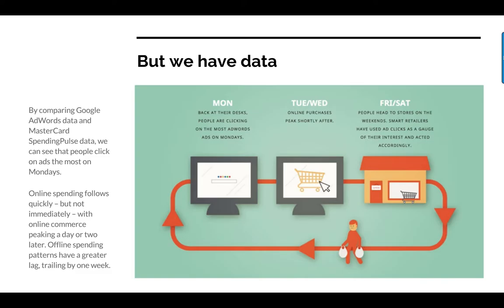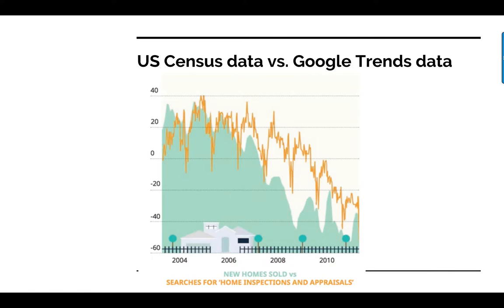We can see people click on ads on Monday, buy not immediately, spend the rest of the week thinking about what they're going to do, and actually get stuff on Friday and Saturday. For example, the yellow curve shows U.S. searches for home inspections and appraisals from 2004 to the end of 2010. You see this up and down pattern — the overall trend is down because it's a negative growth period. The second signal is constant annual variation: people don't like buying houses in November through February because it's cold, but in springtime house sales go way up.